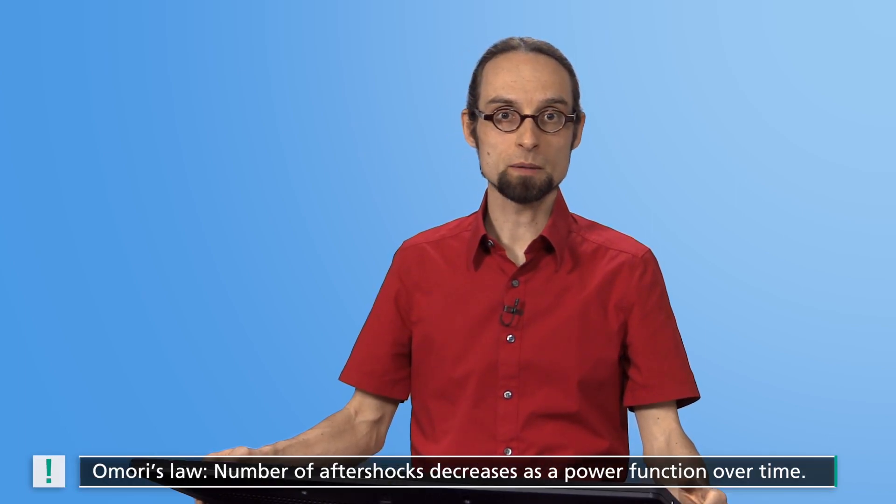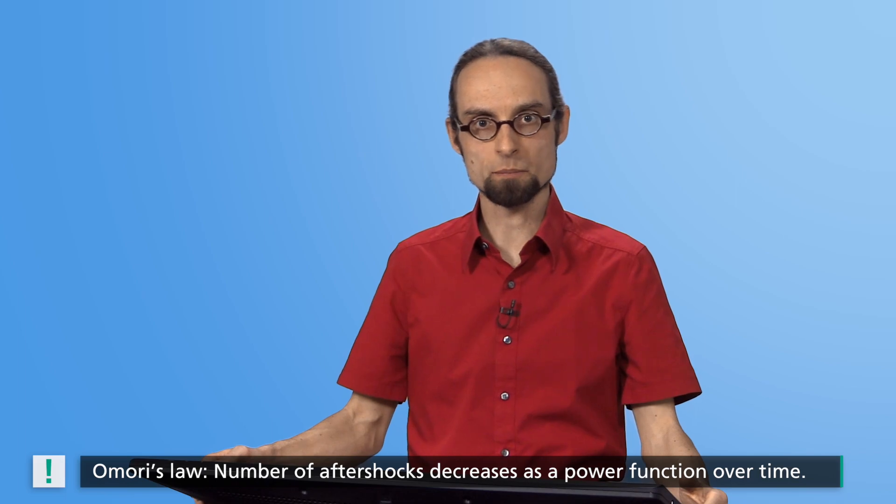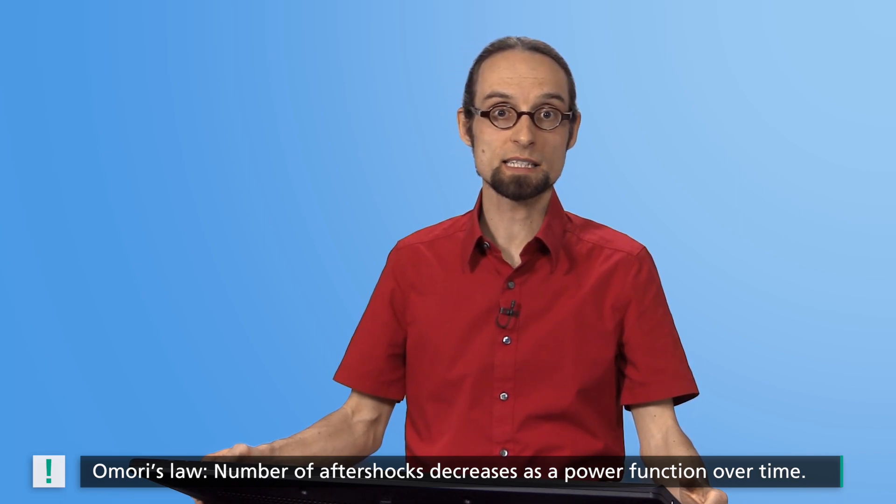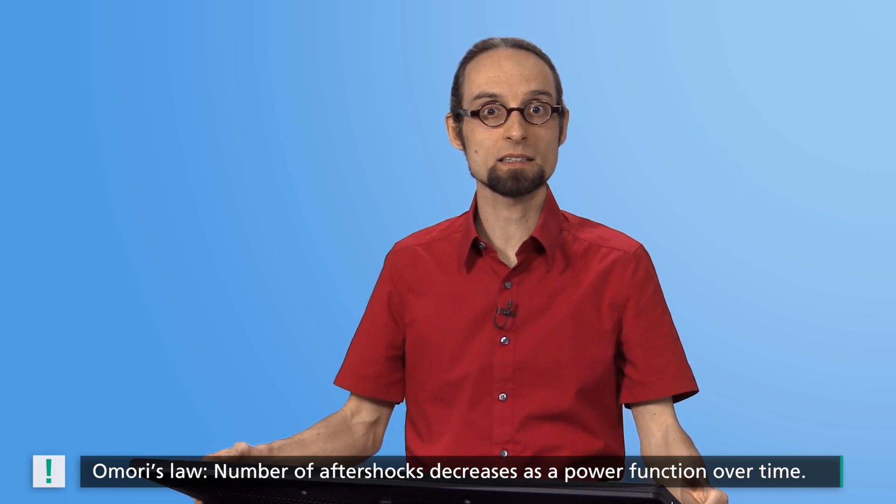Hence, Omori's Law provides information about the decline and the number of aftershocks after a large earthquake. If, additionally, we wish to make predictions regarding the expected magnitudes, we can utilize the empirical observation that the largest aftershock magnitude is smaller than that of the main shock by around 1. If we then also assume a Gutenberg-Richter distribution for the aftershocks, it is possible to roughly estimate the expected aftershock magnitudes.